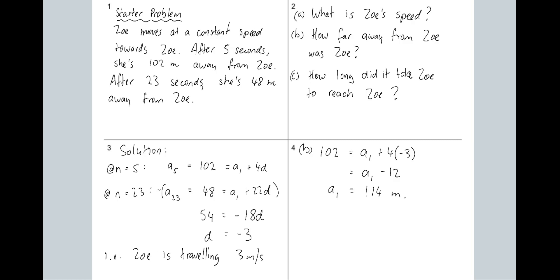In an exam situation you don't get more marks for writing 'she was 114 metres away.' Wait — is she at 102 metres away? Actually, I found 114 metres away. When I wrote this question I didn't think about that, but then when going through it myself I went, oh hang on.